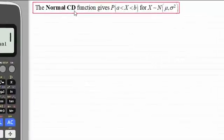Well, the normal CD function gives us the probability that a random variable X lies over an interval a to b, where that random variable X is distributed normally with a mean μ and a variance σ². Remember, the variance is the standard deviation σ squared.